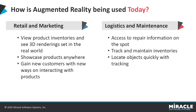How is augmented reality being used in the market today? It's being used all over the place. Some of the main points include retail and marketing — viewing product inventories where you can see full-size 3D renderings and what they would look like in the real world. This can be used for anything from retail clothing to larger products like cars. It also allows you to showcase your product anywhere, so you don't have to have the space to drive the car into the area — you can just pull up the app and view it.